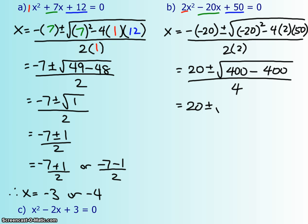20 plus or minus, and those 400s are going to cancel out and give me a 0. Now a square root of 0 is just 0. So if I take the 20 minus the 0 or the 20 plus the 0, I'm going to get the exact same answer, which is 5. So in this case, my x-intercept is 5.